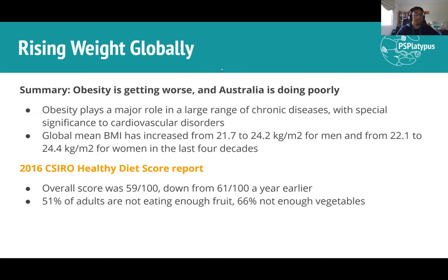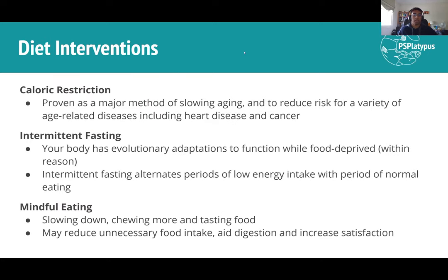The key takeaway from the statistics is that obesity is getting worse, and Australia is worse than the global average. Obesity is a risk factor for an enormous number of diseases. A large proportion of the Australian population is overweight or obese, and many people do not meet basic dietary requirements. These are important areas for potential improvement in preventive health.